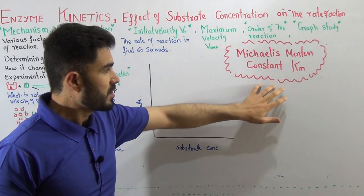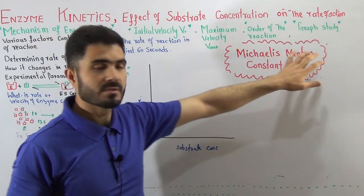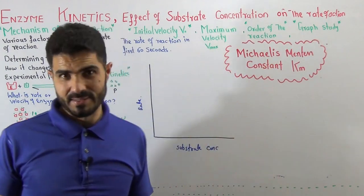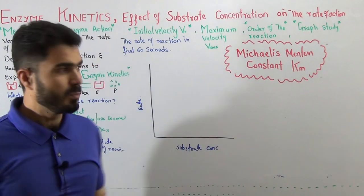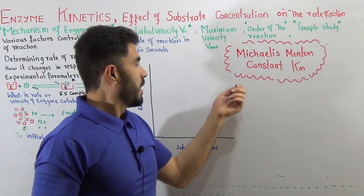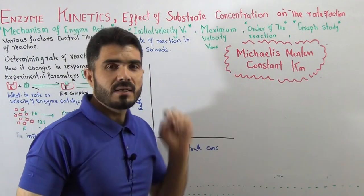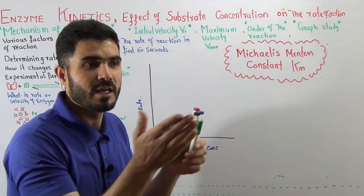In Michaelis-Menten constant, this constant was actually devised by two scientists - one was Michaelis, second was Menten. One is male and female actually. This is not the name of a single person. There are two scientists, one is male, other is female. Both died around the 1960s.